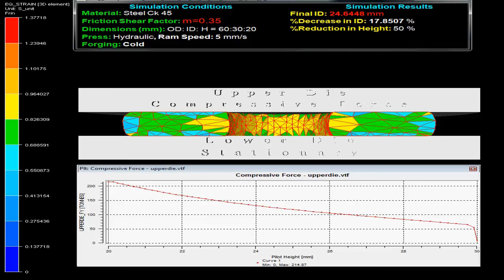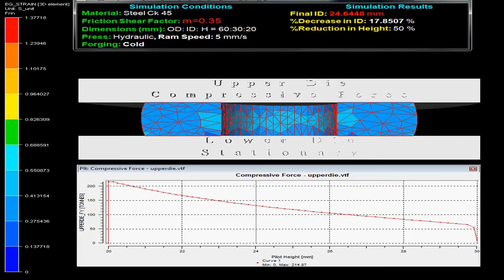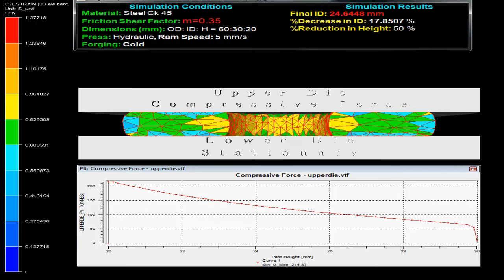At the bottom the graph between force on the upper die versus pilot height is shown. The equivalent strength generated during the process can be compared with the help of the scale given on the left side.